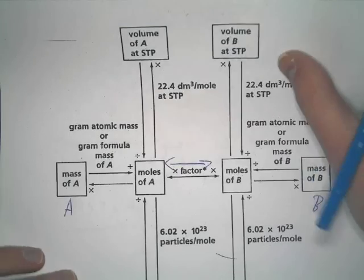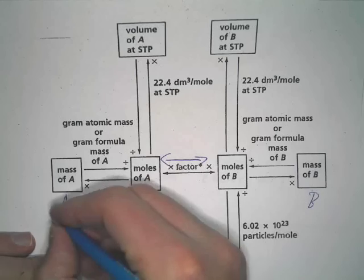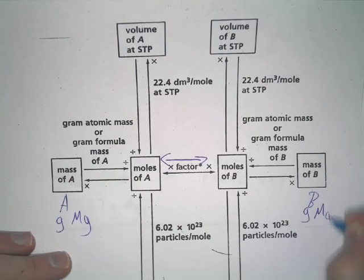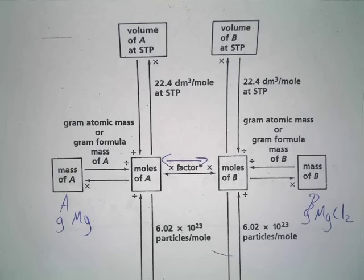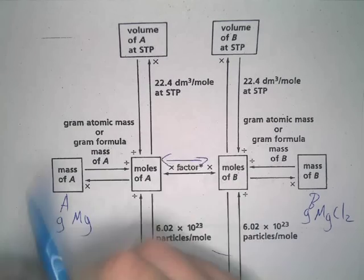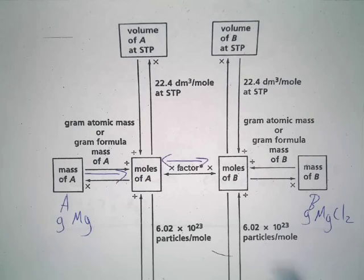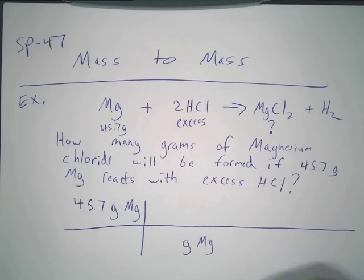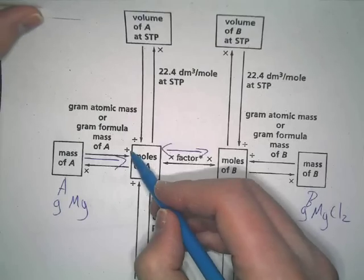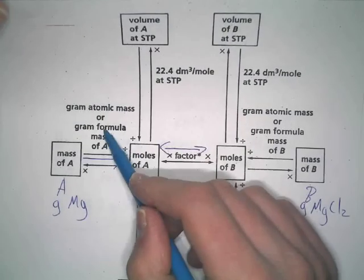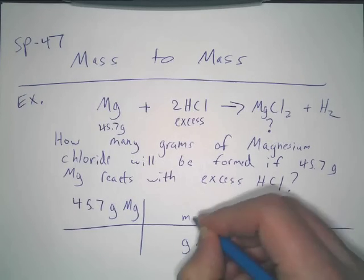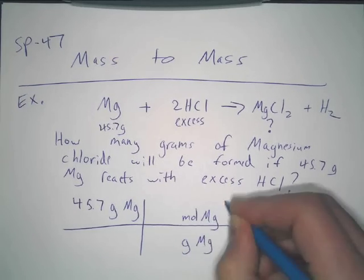Now, we're using our little chart here. We have grams of magnesium, and we want to get grams of magnesium chloride. So, to do that, we're going to do three steps. We're going to go mass to moles of A. So, moles of magnesium. Let's convert that right now. So, you go grams. Now, you follow the chart. It tells you you're going to divide by the atomic mass of magnesium. So, what is the mass of magnesium? Is it 24.31?